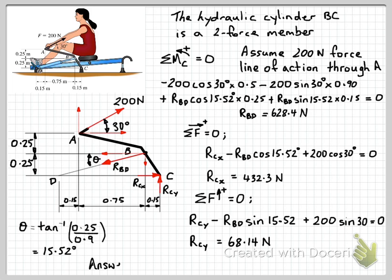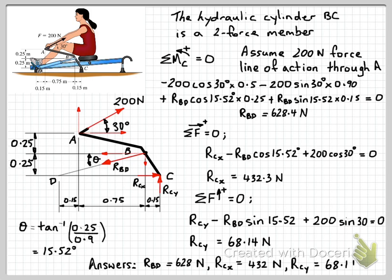Rounding to three significant figures, our final answers are: RBD, the force in the hydraulic cylinder, equals 628 Newtons; RCX equals 432 Newtons; and RCY equals 68.1 Newtons. That's the end of the problem — I hope you found that helpful and interesting, and I'll see you in the next video.